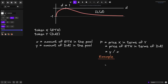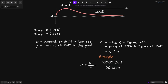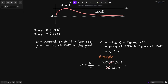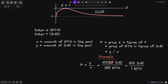For example, we'll say there are 10,000 DAI in the pool and 100 ETH in the pool. So P will be equal to Y over X. Y is the amount of DAI and X is the amount of ETH, so this ratio simplifies to 100 DAI for 1 ETH. So when there are 10,000 DAI and 100 ETH in the AMM, the price of ETH in terms of DAI is 100 DAI per ETH — 1 ETH costs 100 DAI.